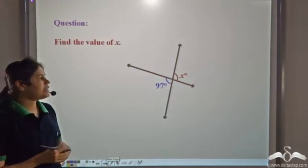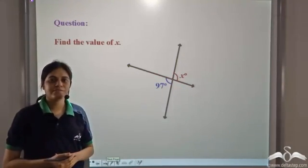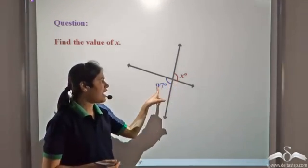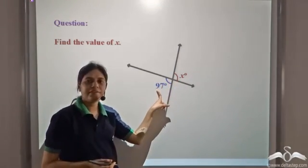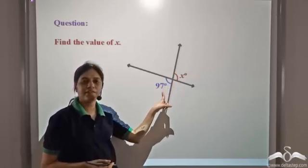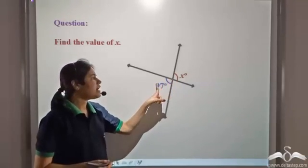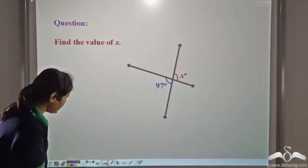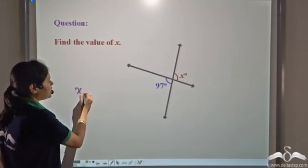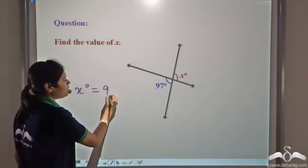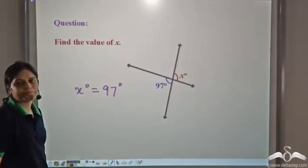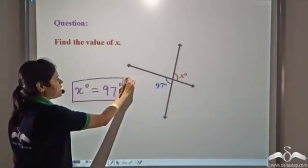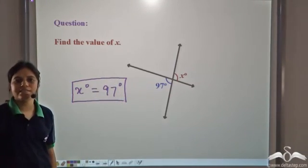Now can you find the value of x? Well, x and ninety-seven are vertically opposite angles, so they should be equal. So x degrees is equal to ninety-seven degrees; hence the value of x is equal to ninety-seven.